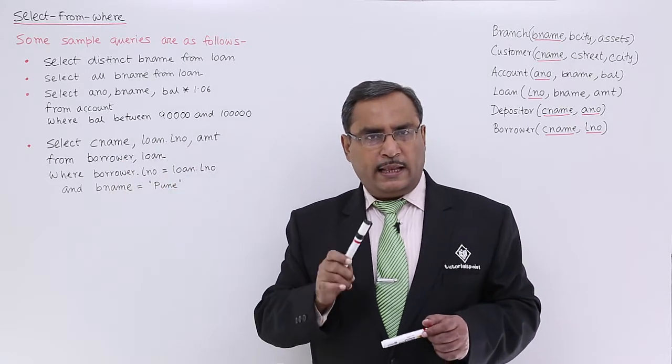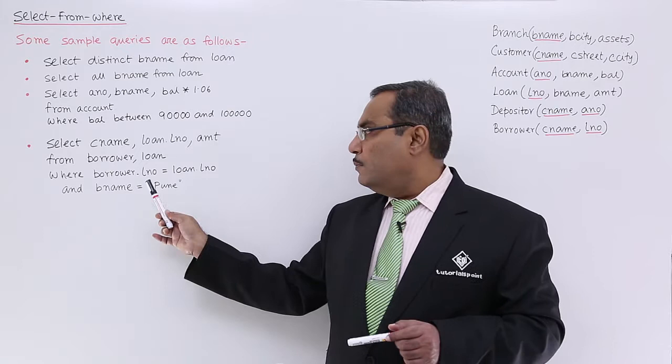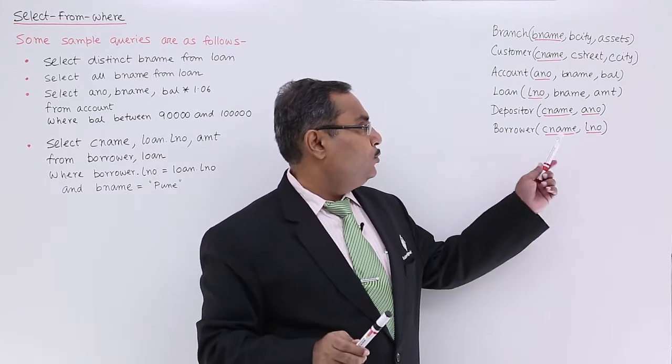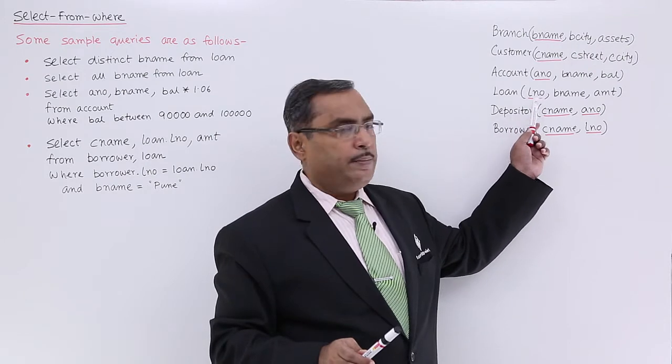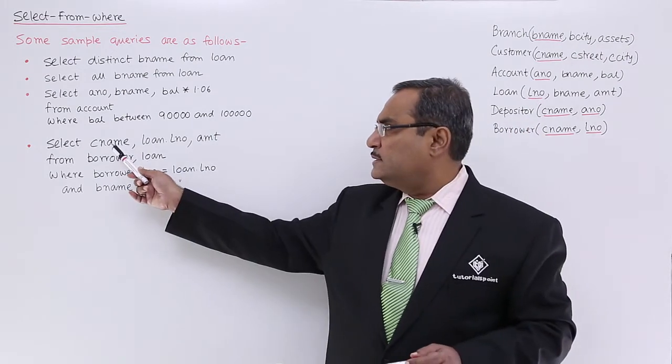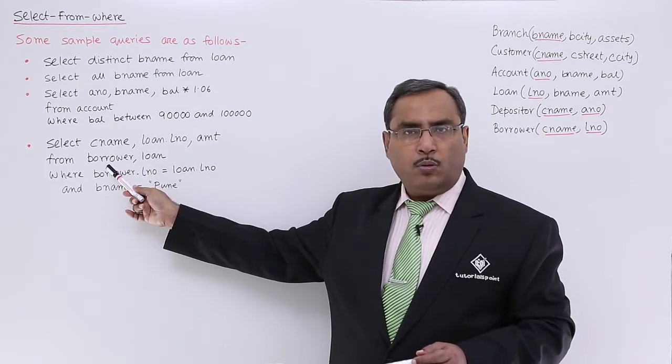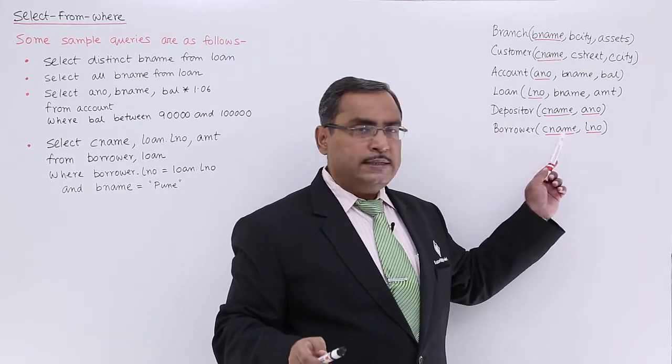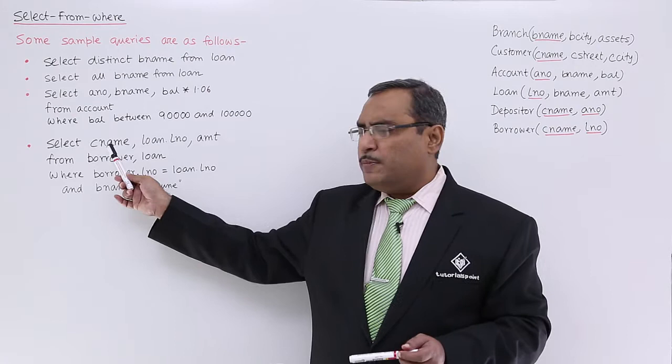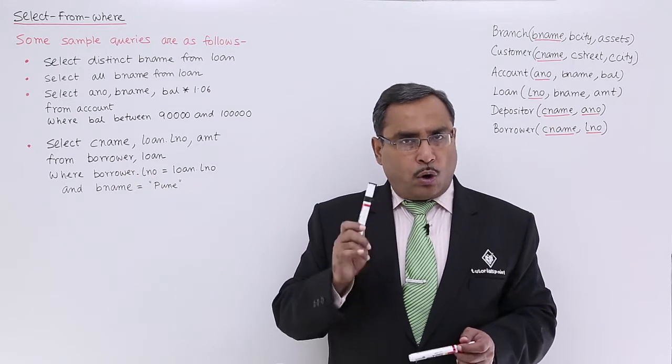We require to get the column outputs as the customer name and this loan number. Now, LNO is common between both loan and borrower. Borrower has LNO and loan also has LNO. Here, CNAME can only come from borrower because loan does not have CNAME, only borrower has CNAME. Instead of writing CNAME, I can also write borrower dot CNAME.